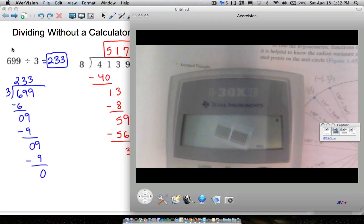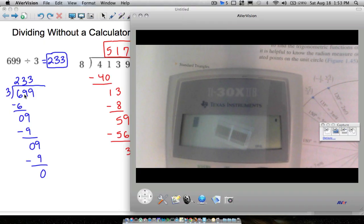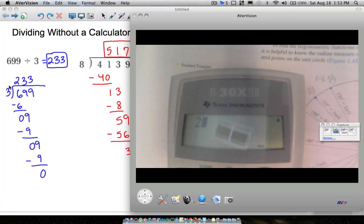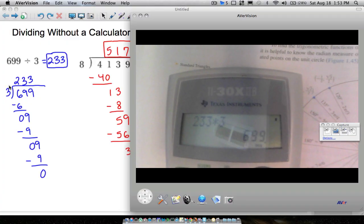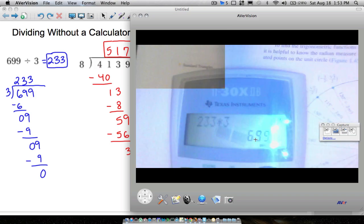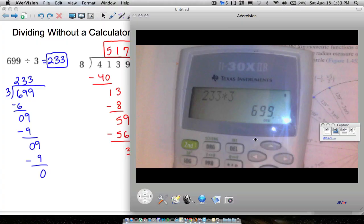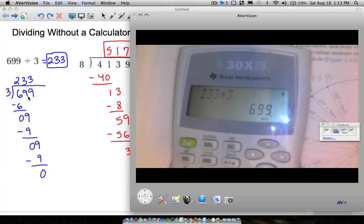So let's go back to this first example. What you should be able to do every time is the two numbers on the outside, you should be able to multiply these to get the inside number. For example, if we take 233 times 3, and I'm just going to use a calculator here to show you, if we multiply 233 times 3, can you see that? 233 times 3 does give you 699.